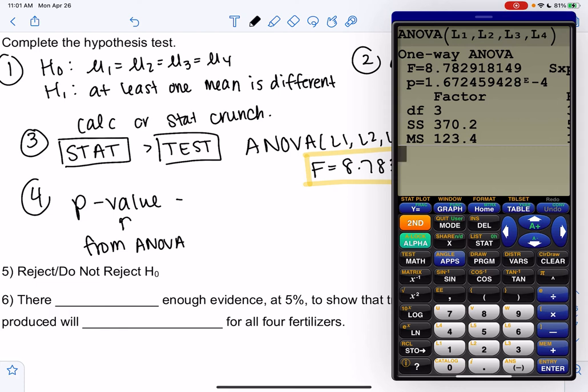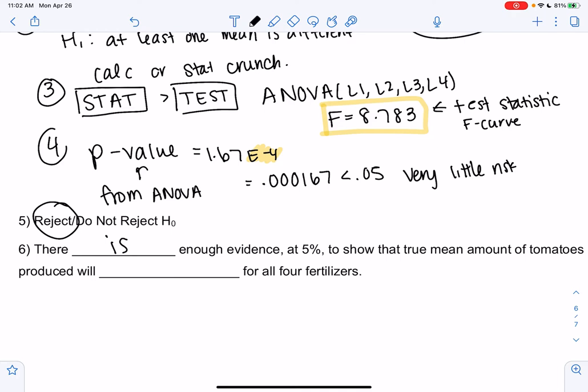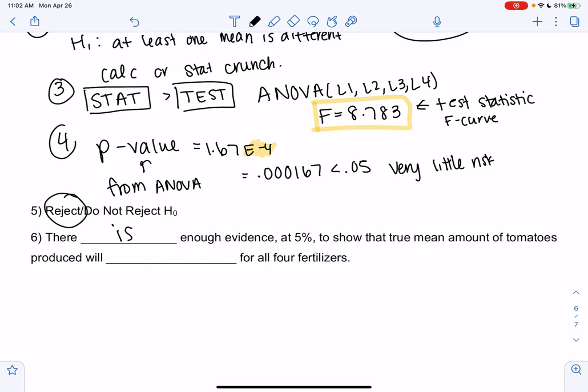So where it says P, 1.67 E to the negative four. So again it's one of those tricky numbers. So we move the decimal four to the left. 0.000167. So it's a very small p-value. Is it less than our alpha? Yeah. So it's way less than alpha. Very little risk. So we're going to go ahead and reject. It's very unlikely that we just randomly had a difference. It's more likely that there is a difference. So there is enough evidence at 5% to show the true mean amount of tomatoes produced will not be the same for all four fertilizers. So I'm not saying different because maybe three of them are all the same and only the fourth one's different. Or maybe all four are different. That's what we'll investigate in a second. So that's our hypothesis test.